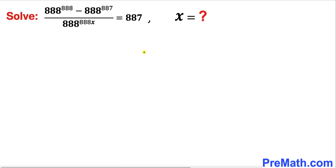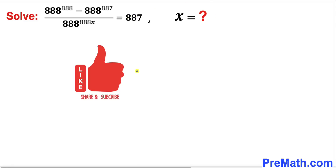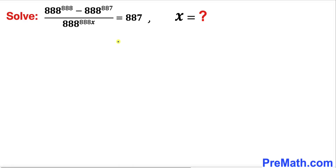Welcome to pre-math. In this video we are going to solve this given rational equation: 888^888 minus 888^887 divided by 888^888 times x equals to 887. In other words, we are going to find the value of x. Please don't forget to give a thumbs up and subscribe. Let's go ahead and get started with the solution.